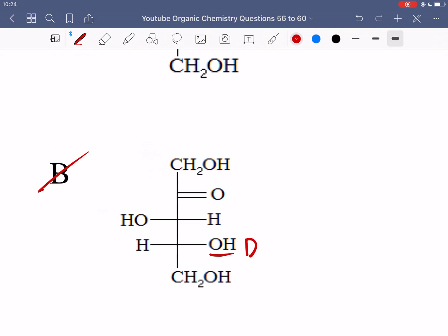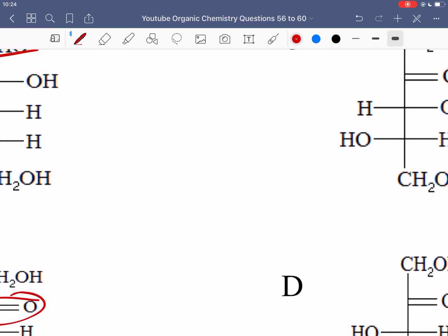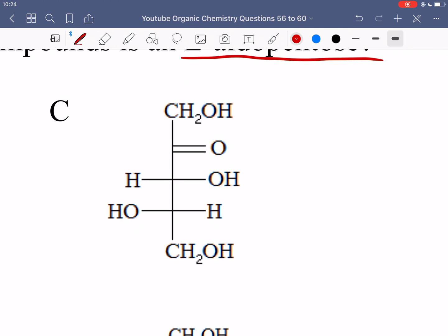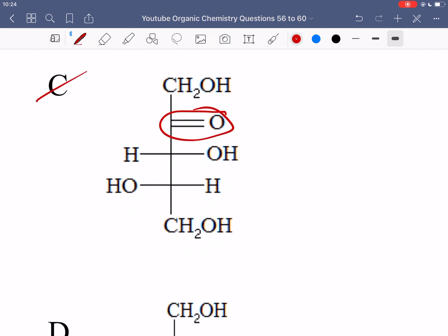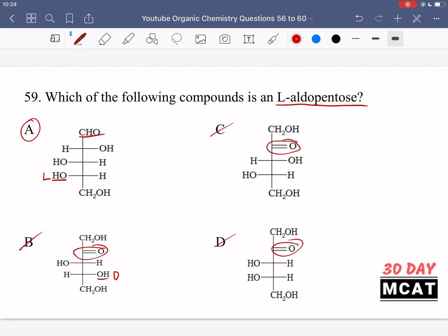The problem with B is that, first of all, it's a ketone, and then secondly it's a D-sugar, so it's wrong on both accounts. C also has a ketone, so that would make it a ketopentose, even though it is L, and it is 5 carbons. And then, similar thing over here, it is a ketone, and therefore it's incorrect.